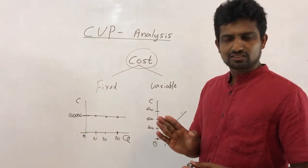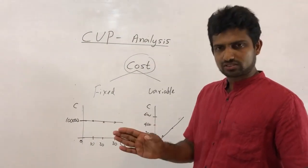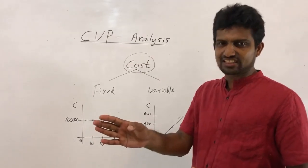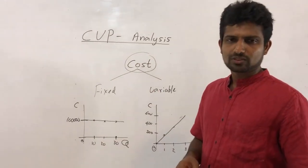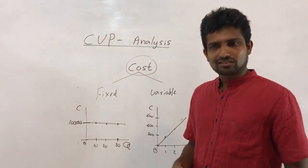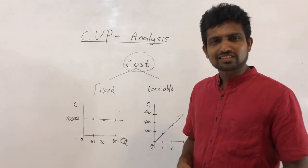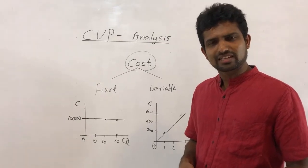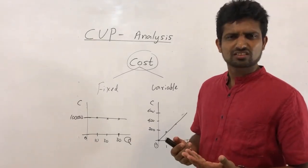In the practical world, some cost we can't exactly say that it is fixed or variable. The basic example is electricity. Earlier I told you electricity is fixed, but sometimes you might feel, is it fixed? Why?